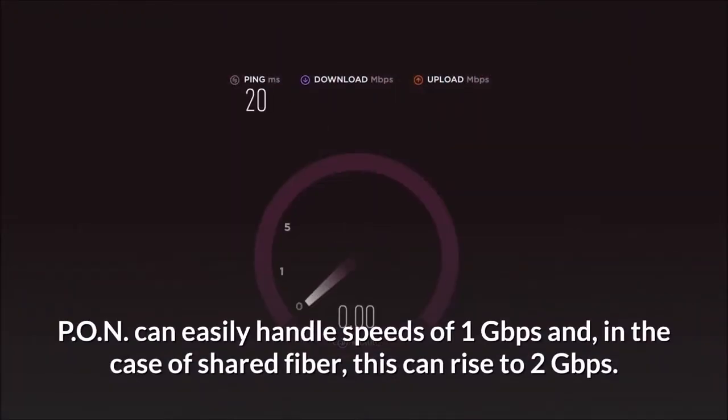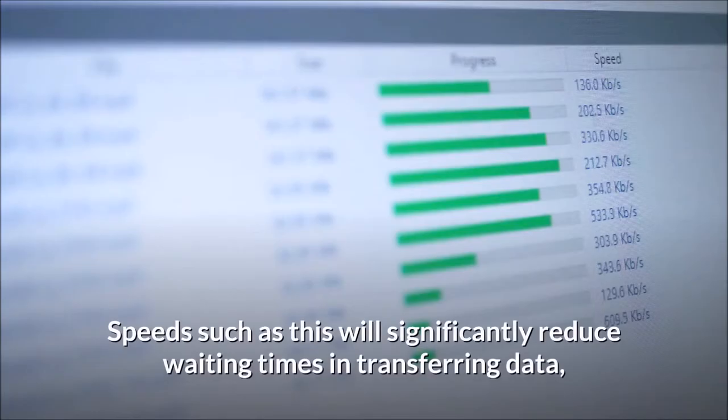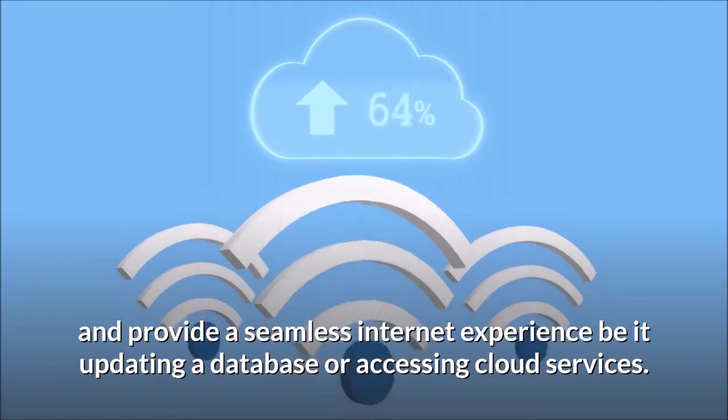PON can easily handle speeds of 1 gigabit per second and, in the case of shared fiber, this can rise to 2 gigabits per second. Speed such as this will significantly reduce waiting times in transferring data and provide a seamless internet experience, be it updating a database or accessing cloud services.